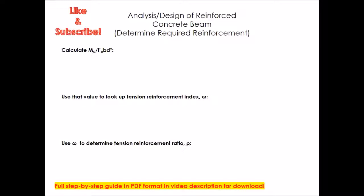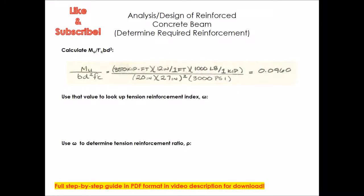The first thing you want to do is calculate what's essentially a modified moment factor. That's Mu divided by the product of f'c, the beam width b, and the rebar depth d squared. This gives you a modified moment factor value, and it's one way to start designing tension reinforcement for a concrete beam. There are different approaches — this is a nice, easy, quick way to go about it.